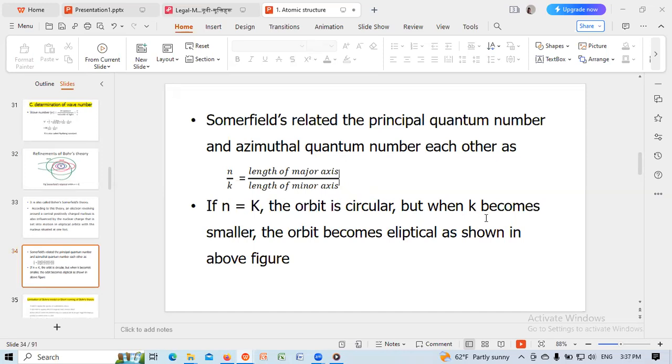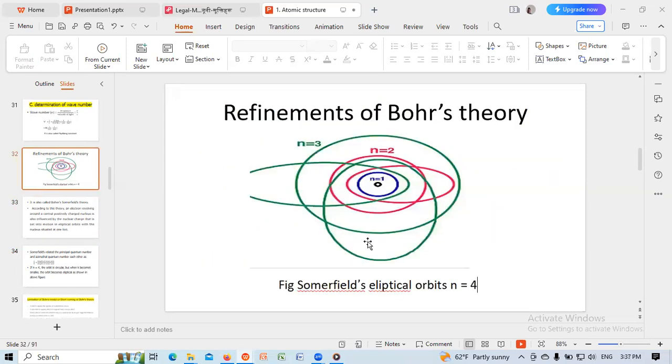But when k becomes smaller, the orbit becomes elliptical as shown in the above figure.